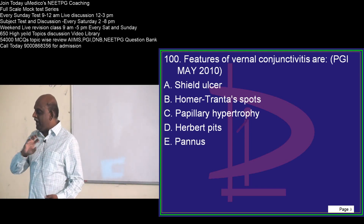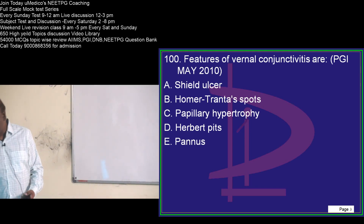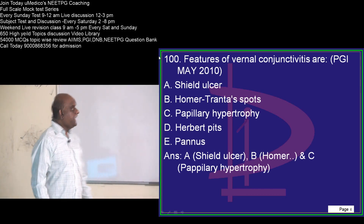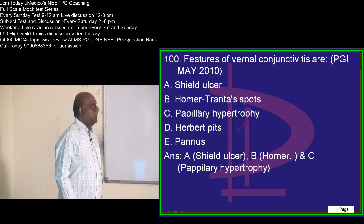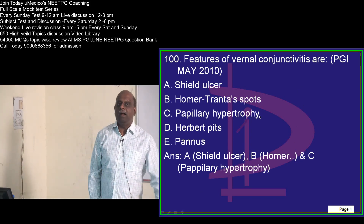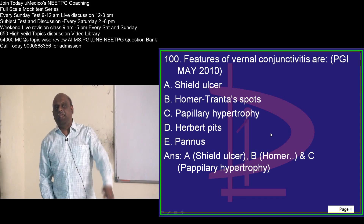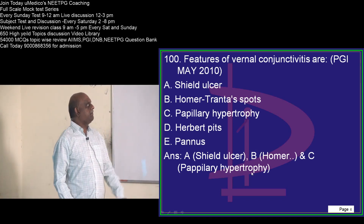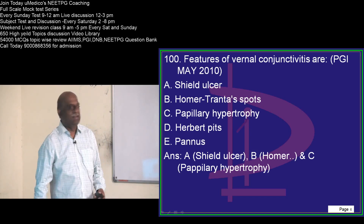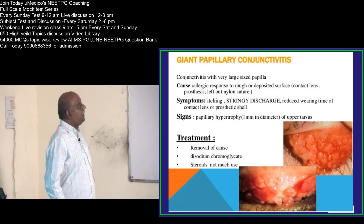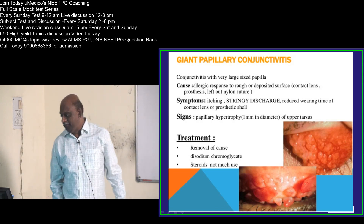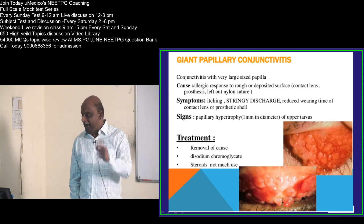What are the five bullet points you need to know about vernal conjunctivitis? Shields, ulcers, Horner-Trantas spots, and papillary hypertrophy are the classical features of vernal conjunctivitis. Whereas Herbert's pits, pannus — these are all trachoma features. Giant papillary conjunctivitis is one of the varieties.